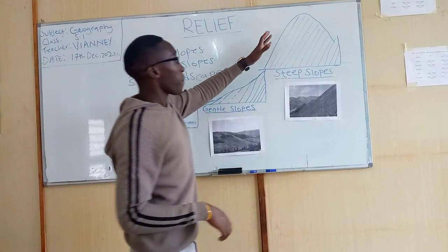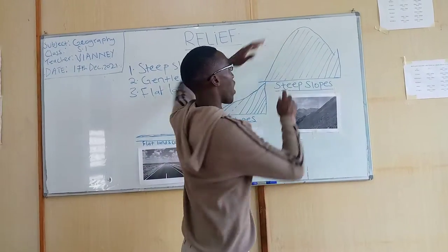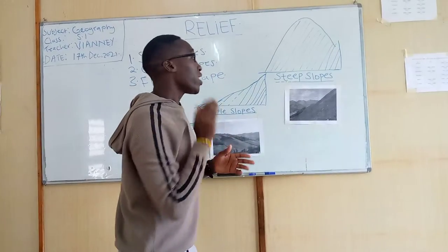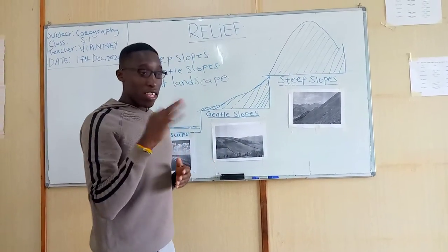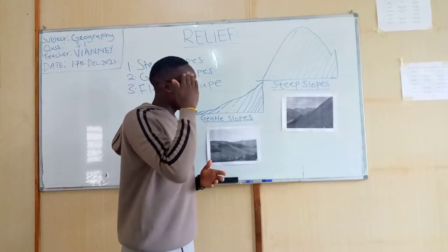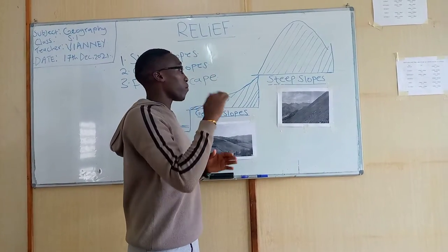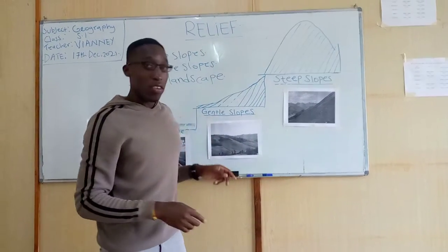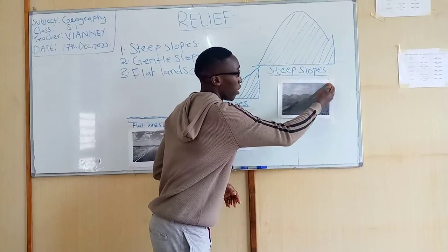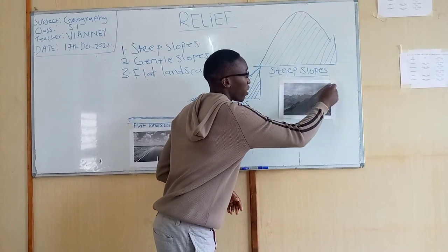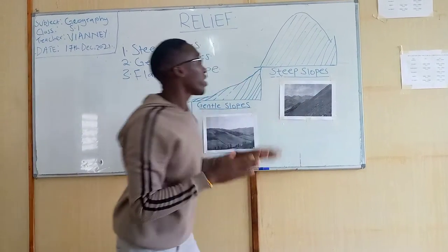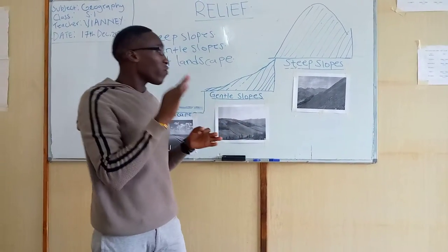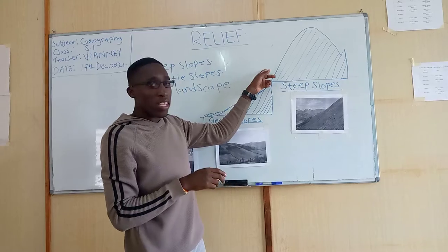The first one is steep slopes. If you can look at this diagram here, it is like this. And if you know a mountain — a mountain is like this. You can also see here in the picture, this is a mountain.